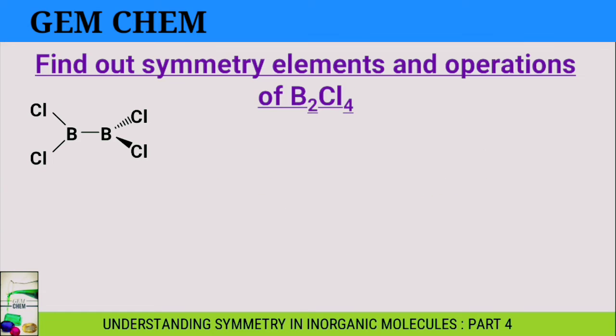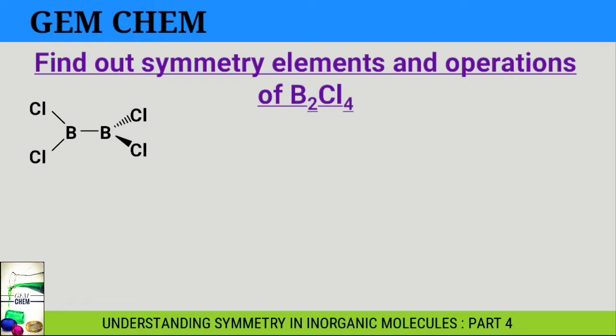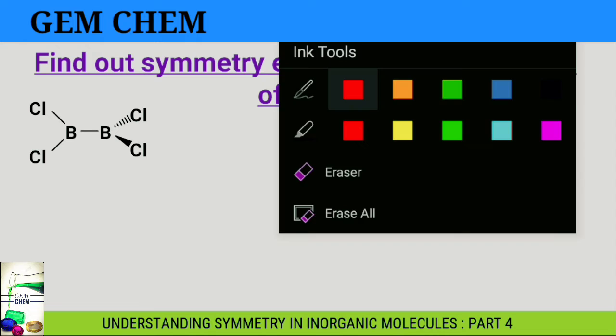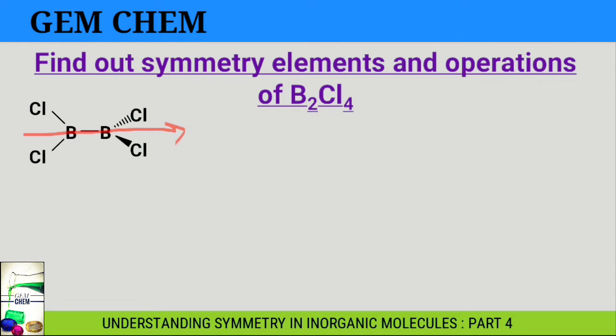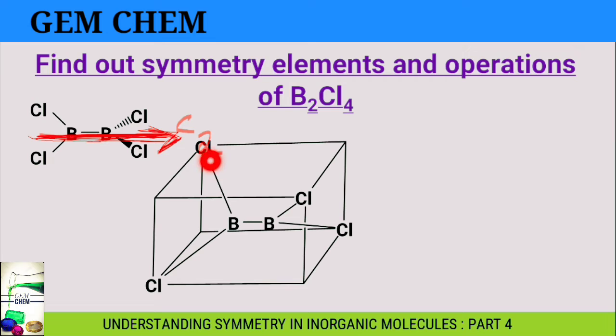First we'll discuss B2Cl4. As you can see, the structure looks like allene from organic molecules, and the symmetry elements we're going to obtain are the same as for allene. Here you can see that one chlorine is above the plane, one chlorine is below the plane, and the B-B bond and the chlorine present here are in the same plane. These chlorines are present at alternate vertices with the B-B bond placed in between.